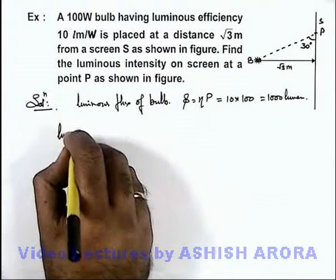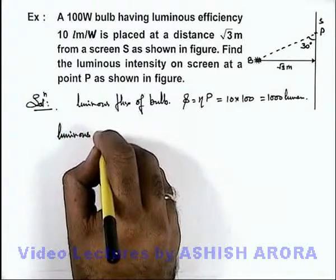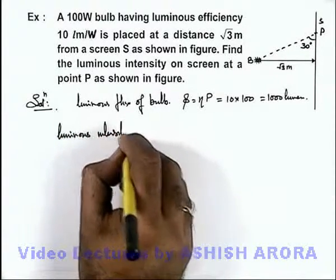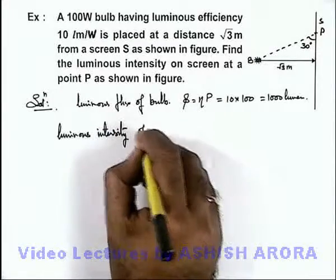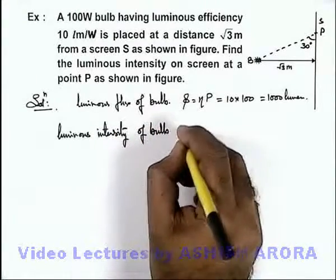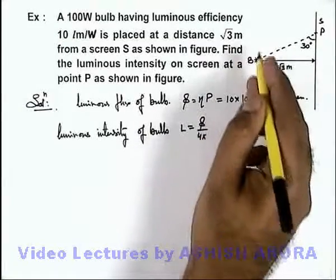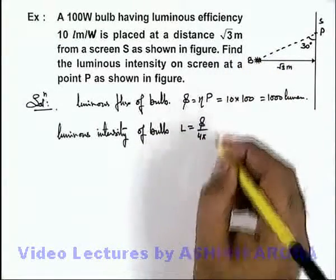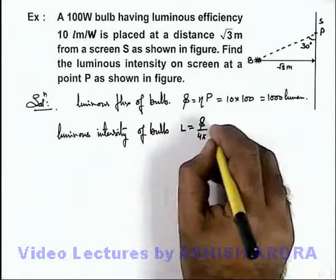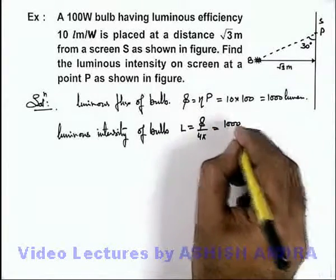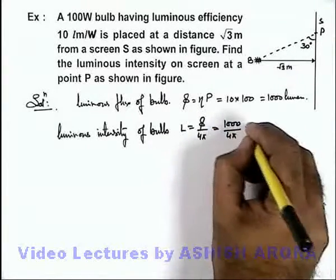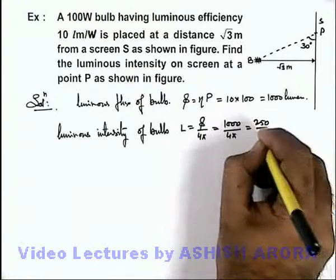So here, luminous intensity of bulb we can write as L equals φ by 4π, as we are assuming it is emitting light energy in all directions uniformly. So it will be 1000 divided by 4π, that will be 250 by π candela.